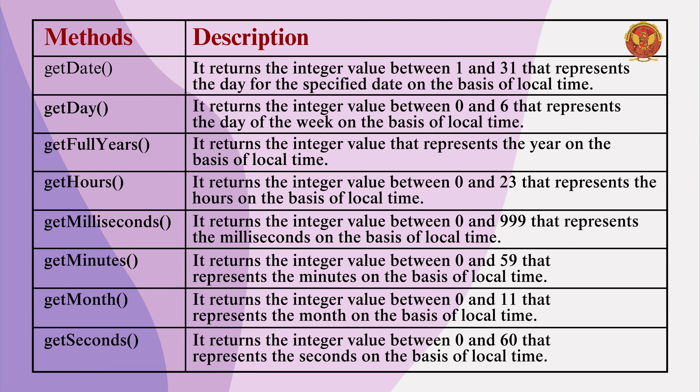The next method is getDay, which represents the day of the week. Based on local time, the getDay method returns an integer value between 0 and 6, where the 0 to 6 value represents the day of the week.